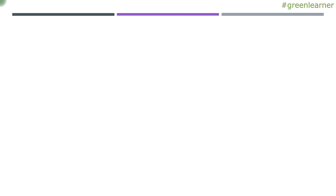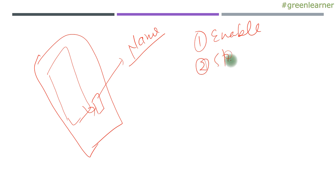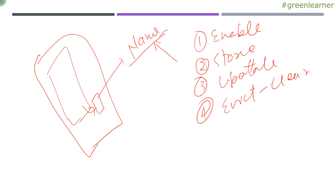First, let's understand how we use cache. Cache means you are going to store some information near to your application — this is your application and this will be your cache, stored as part of your application. You have to give your cache some name. The operations are: first, enable caching in your application; second, store information into your named cache; third, update the information when the actual value is updated; and fourth, evict things — meaning remove the cache information when you no longer need it.